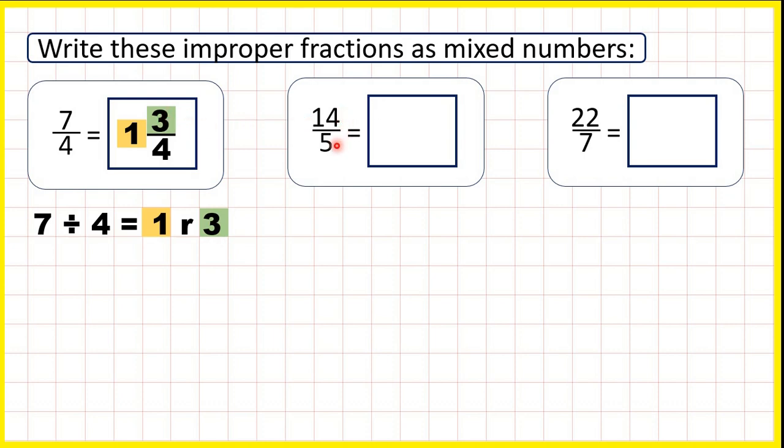Now we have 14 fifths, so 5 will be the denominator of our mixed number, and we can work out our mixed number by dividing 14 by 5.